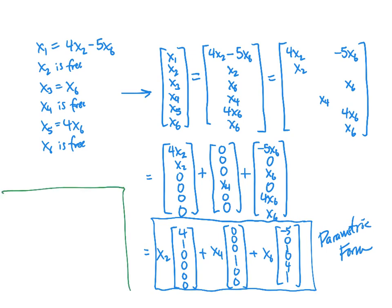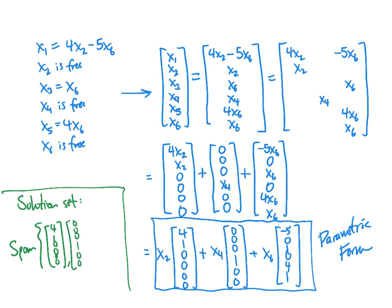Another way to think about this is that the solution set is the span of the three vectors: (4, 1, 0, 0, 0, 0), (0, 0, 0, 1, 0, 0), and (negative 5, 0, 1, 0, 4, 1). Span means we're looking at all possible linear combinations of those three vectors, and that's exactly what the parametric form shows us — any vector that is a linear combination of those three vectors will be in the solution set. Hopefully this helps explain the difference between the general solution, the parametric form of the solution, and the solution set.